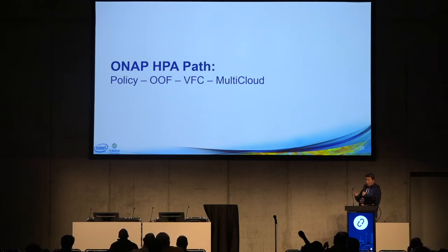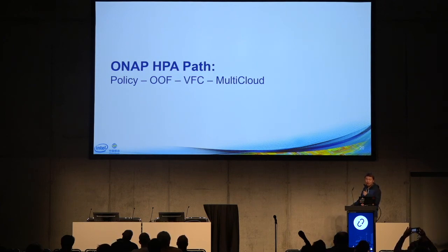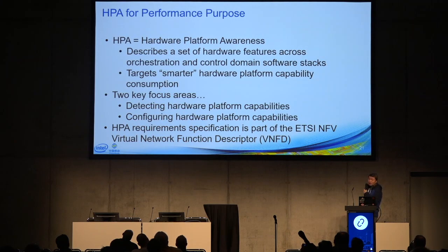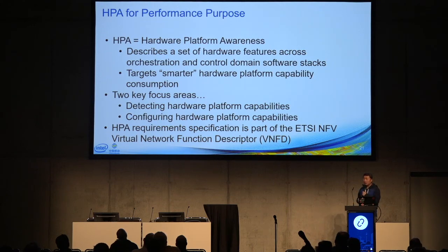The other area we are working on is HPA — Hardware Platform Awareness. There is a critical path for HPA. Since we are working with China Mobile, we chose the VFC path — VFC is from China Mobile, APPC is from AT&T. Policy, OOF, VFC, and multi-cloud are the four critical components in the HPA path. HPA is a concept to describe the hardware capability so that ONAP or OpenStack can understand what capabilities the hardware provides. There are two focus areas: detect capability and configuration capability.